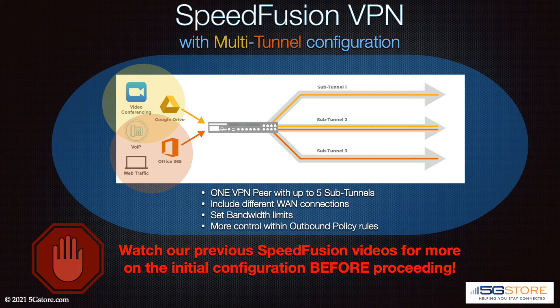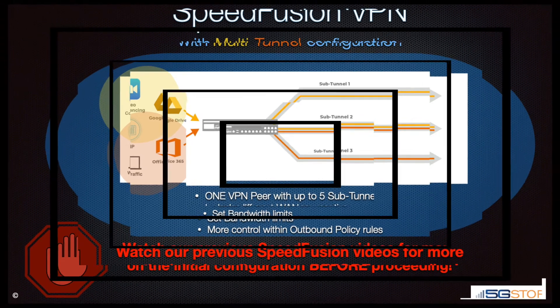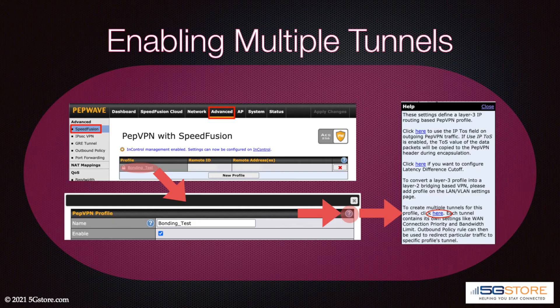Together with outbound policy rules, you have more granular control over how your connections are managed. In our configuration we'll only be setting up three tunnels, though up to five are supported. You'll start at the SpeedFusion profile configuration.